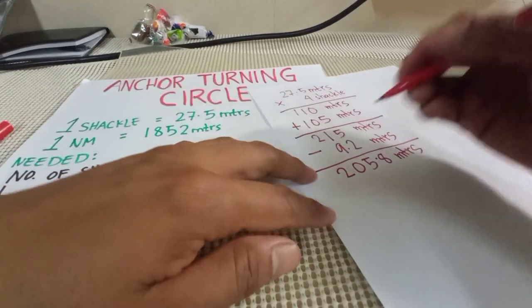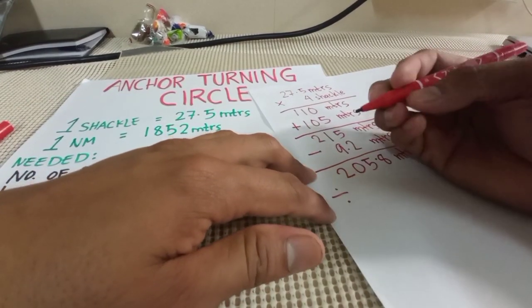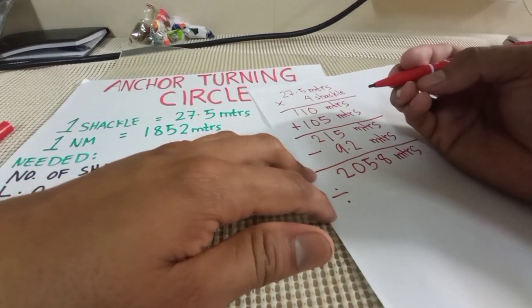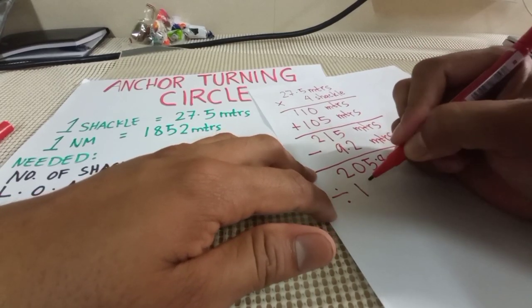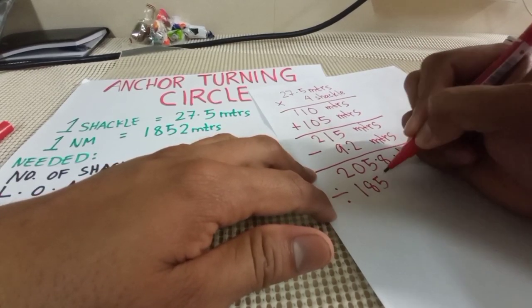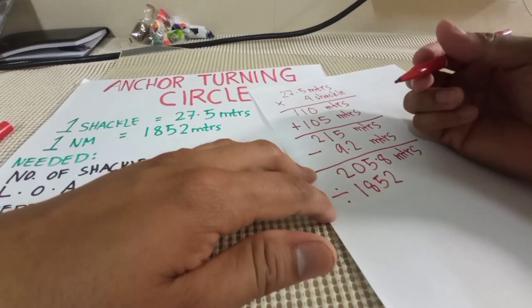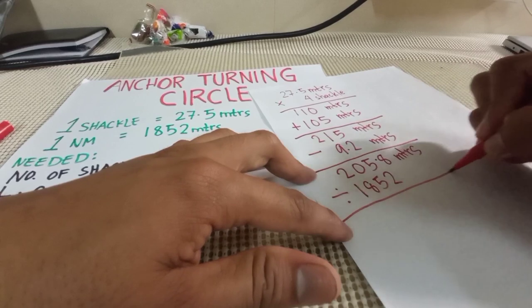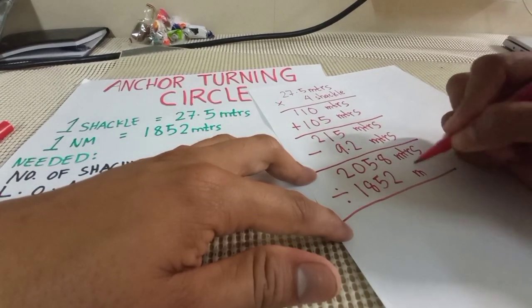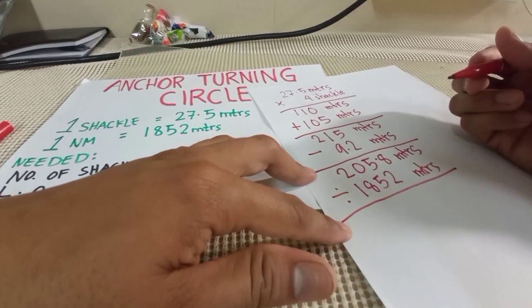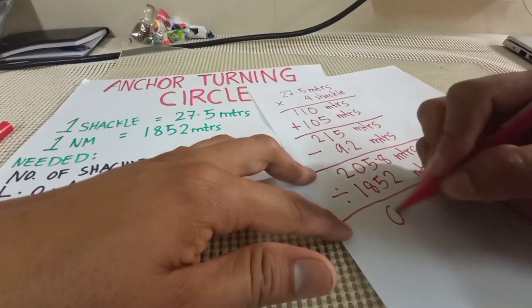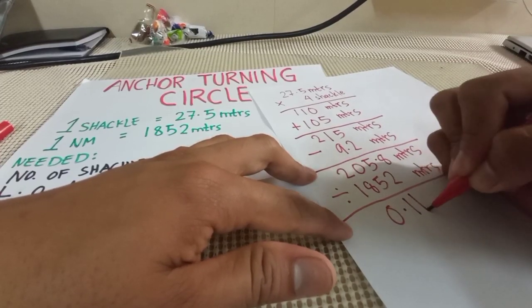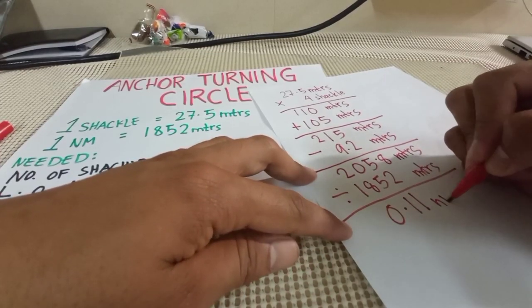So we have to divide the 205.8 meters to 1852. So, it's equivalent to 0.11 nautical miles.